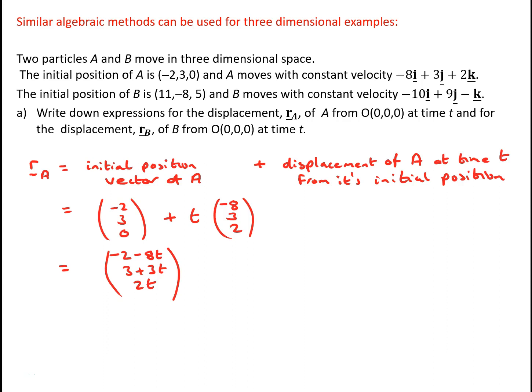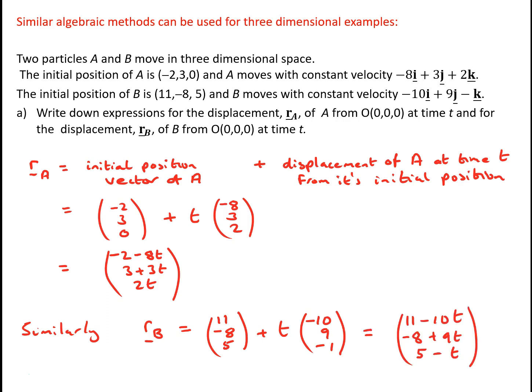Similarly, the position vector of B at time t is the initial position vector (11, −8, 5) plus t times the velocity (−10, 9, −1), which can be written as the single vector (11 − 10t, −8 + 9t, 5 − t).